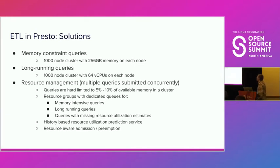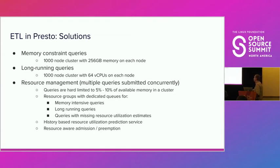The solution was to deploy very large clusters. We used to run 1,000-node clusters with 256 gigabytes of memory in each node, making it far less likely to run out of memory. For resource management, we limited a single query to utilize up to 5% to 10% of available memory in the cluster. With that granularity, we were also able to build a resource prediction system and resource admission and preemption policies based on predicted resources, keeping queries relatively small with respect to available resources.